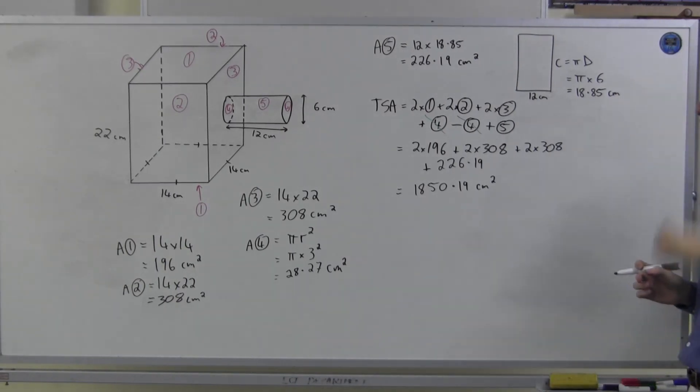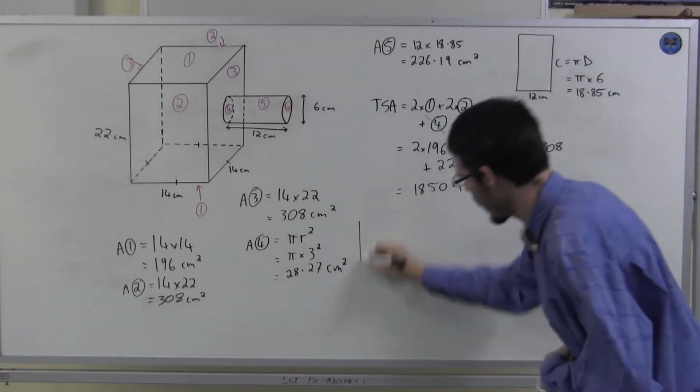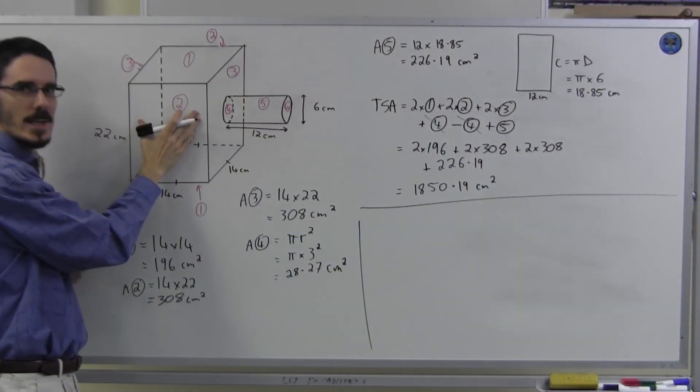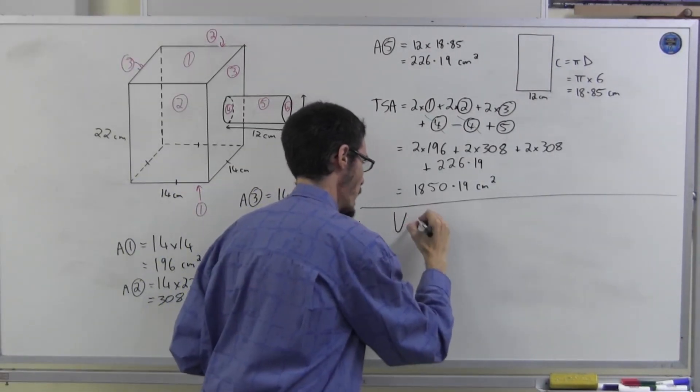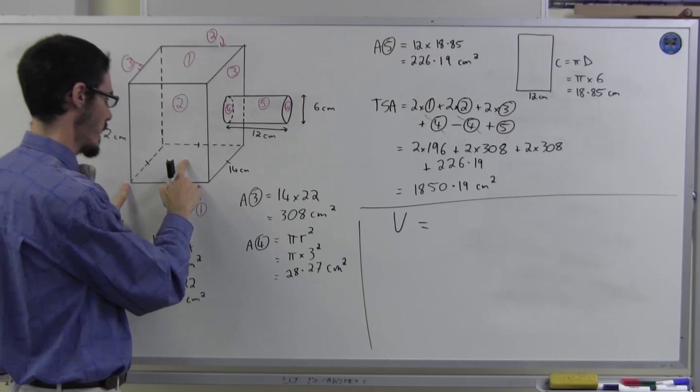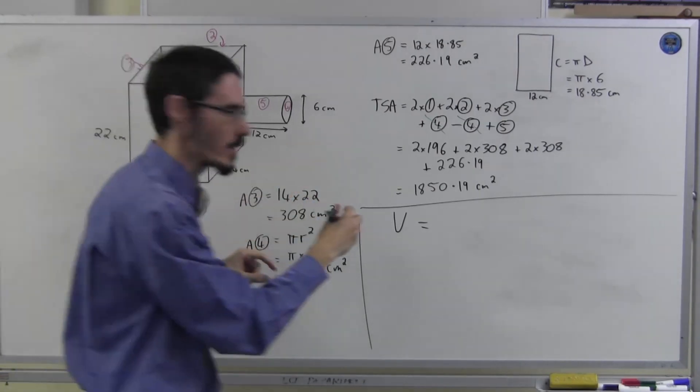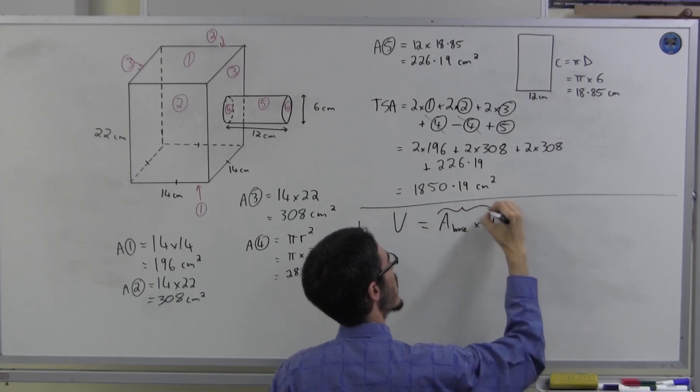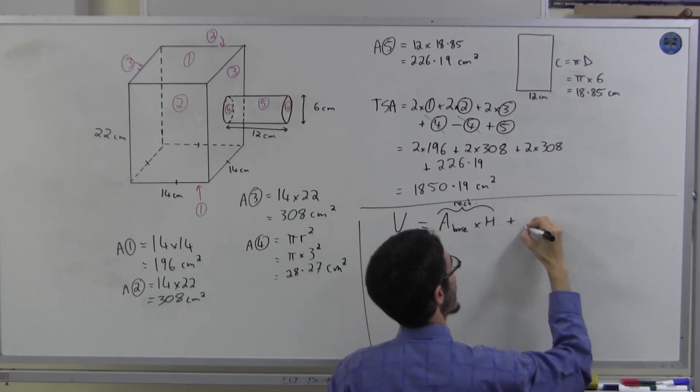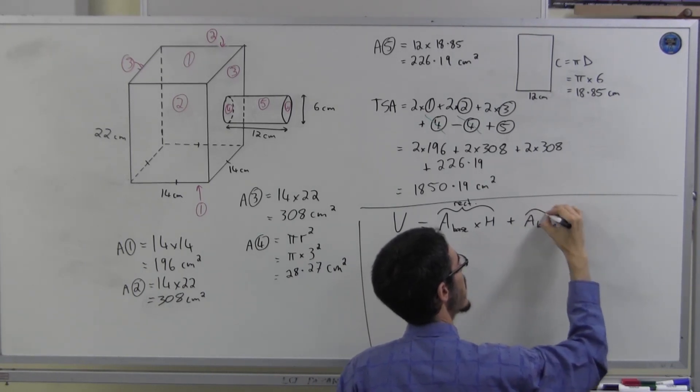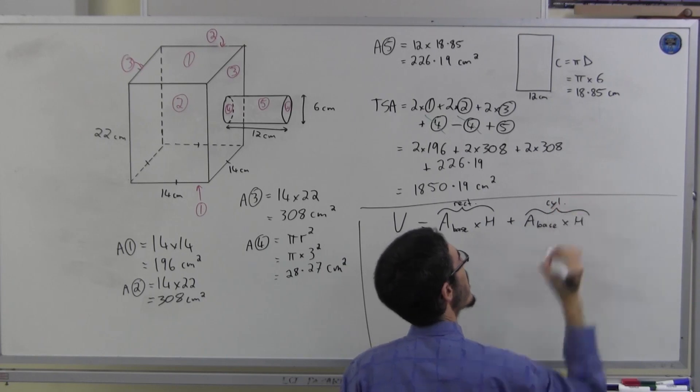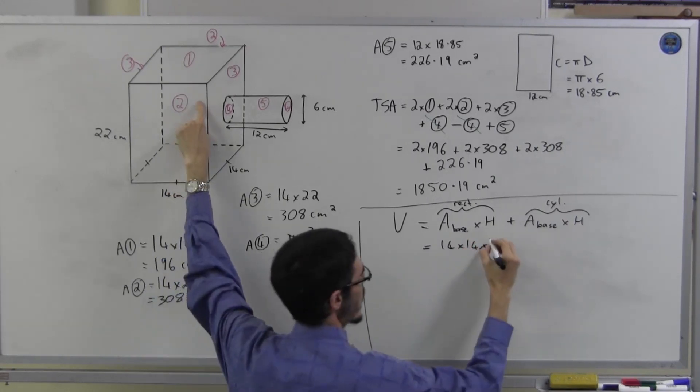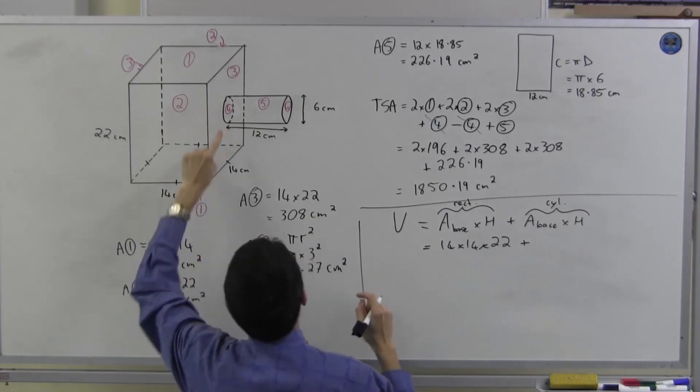Okay so let's work out the volume. You know what, the volume is actually going to be much much easier because the volume of this shape is just the volume of the rectangular bit plus the volume of the cylinder and each of those is a prism. So this one is going to be 14 by 14 on the base. Maybe I should write a formula for you. Area of base times height for the rectangular bit plus area of the base times height for the cylinder.